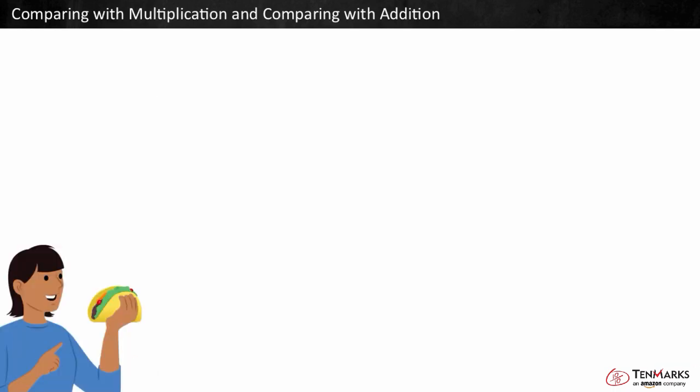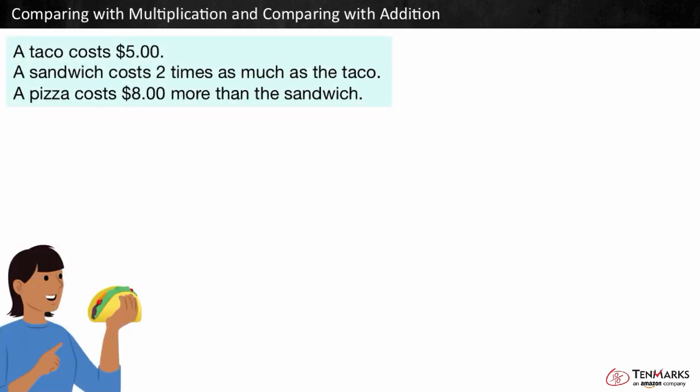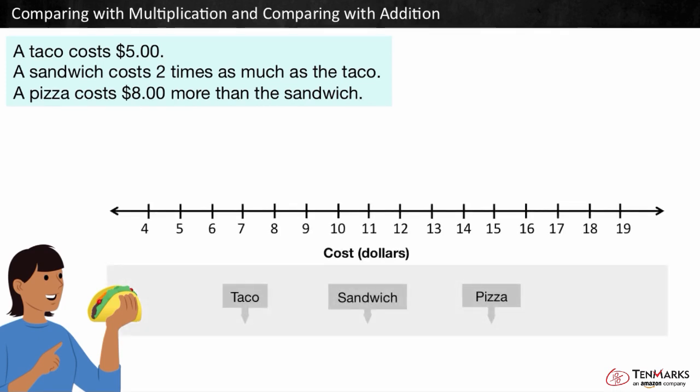Let's look at an example. Use this data to determine the price of a pizza, a taco, and a sandwich. A taco costs five dollars. A sandwich costs two times as much as the taco. A pizza costs eight dollars more than the sandwich. Here is a number line. The numbers below represent the cost in dollars.